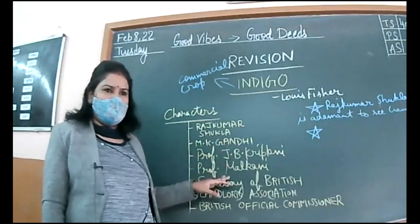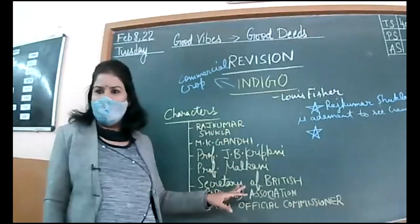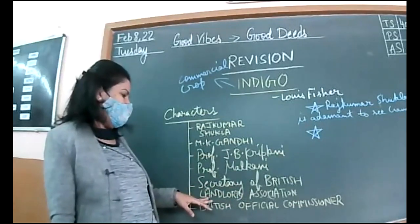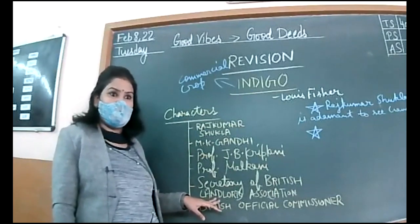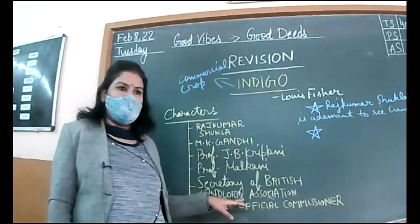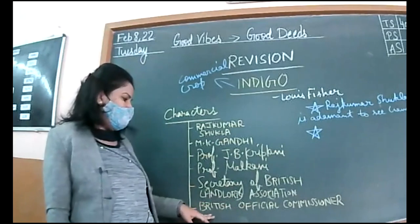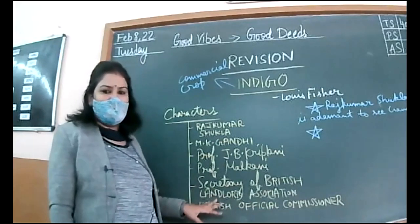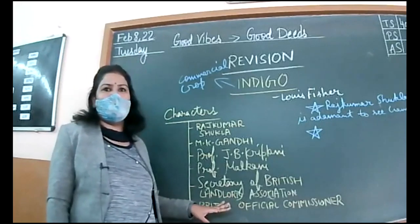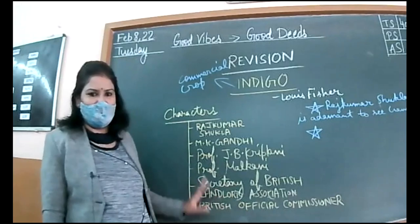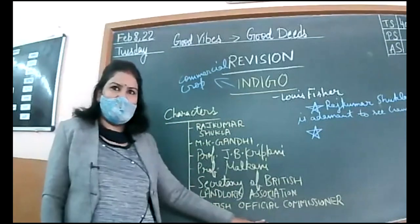Professor Malkani and Kriplani will be helping Gandhi in his further actions. Then there is the Secretary of the British Landlord Association — those who had the rights to take decisions about what percentage they would extract from Indian peasants. Then the British Official Commissioner — the official responsible for taking decisions on behalf of the British. There are more characters, but today we will reach the point where these characters enter the story.